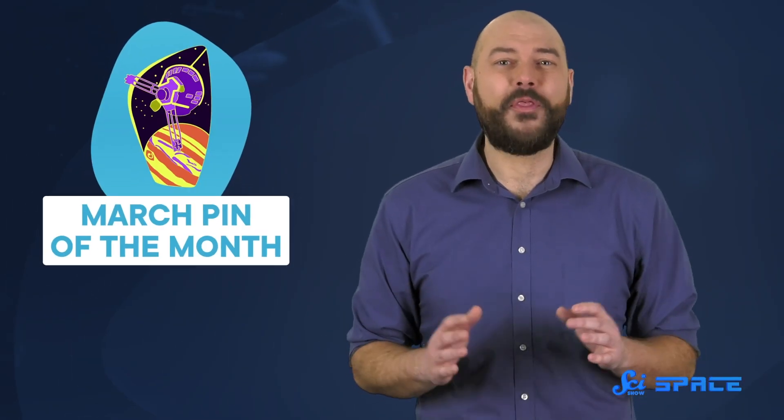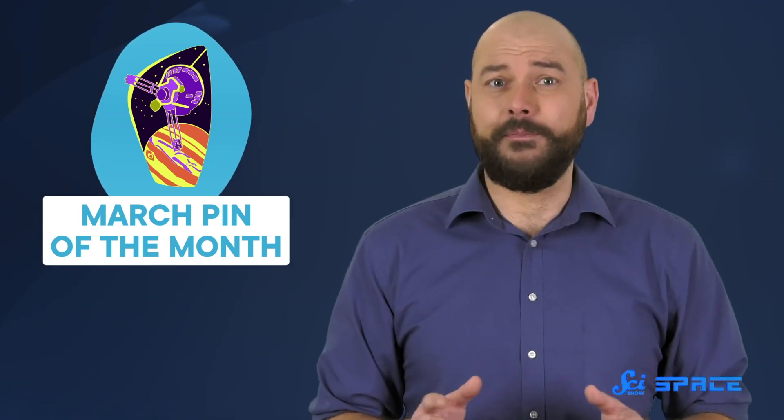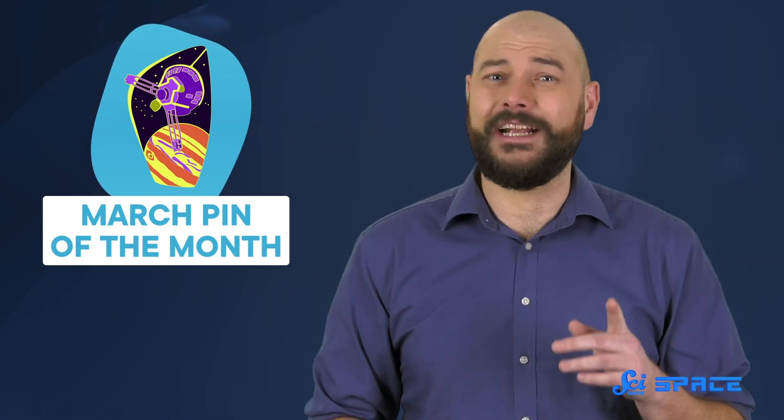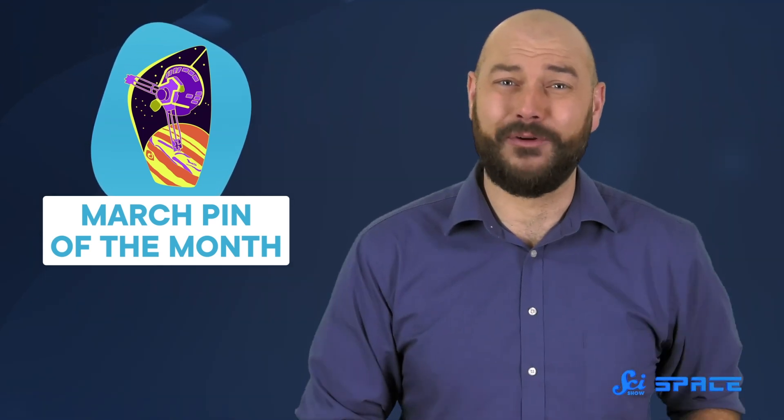The month of March is almost over, which means you're almost out of time to order March's pin of the month. This month's pin is Pioneer 10, the 30-year solar system mission that could. This is a pre-order, meaning we'll take all the orders we get at the end of the month and then make that many pins. And we won't make any more, but we will get started on a new pin next month. Orders close at the end of March, so check out the link in the description before time runs out.